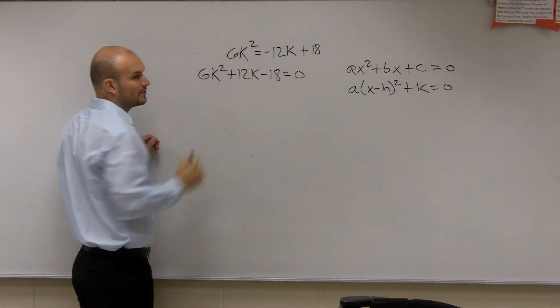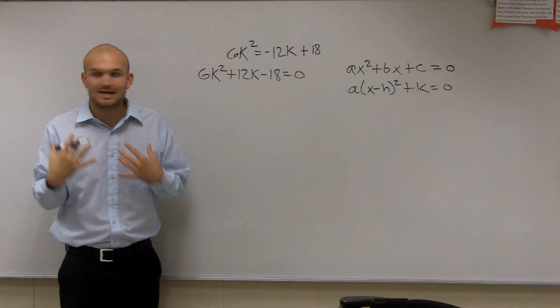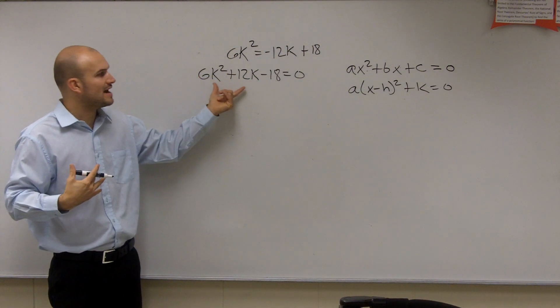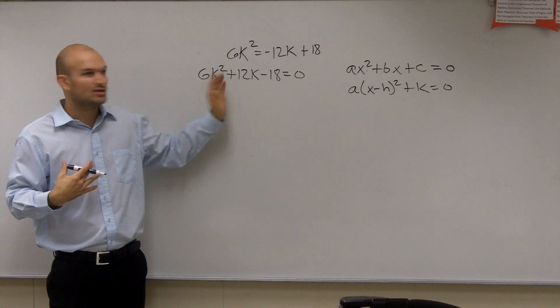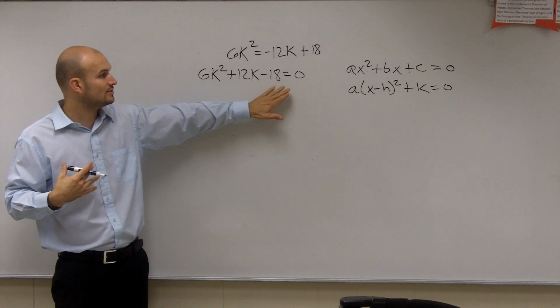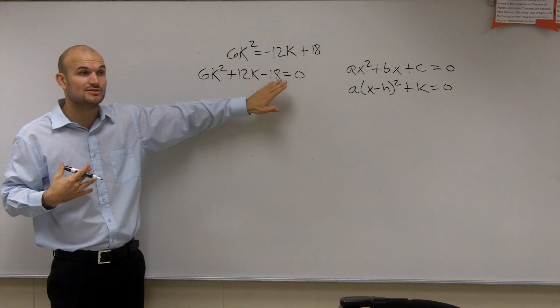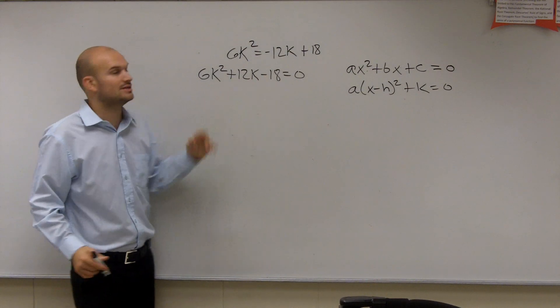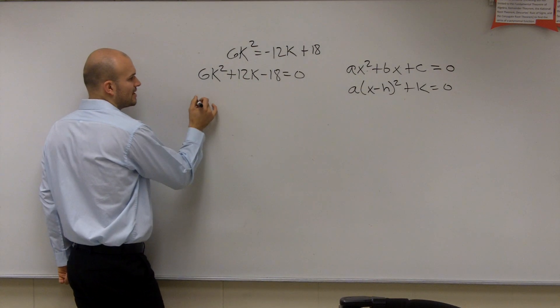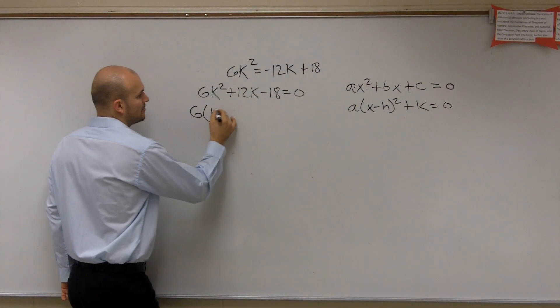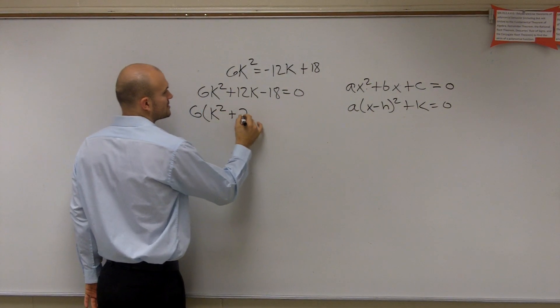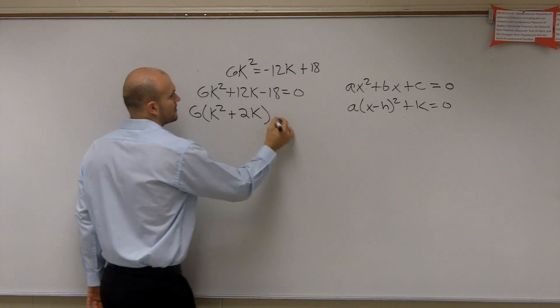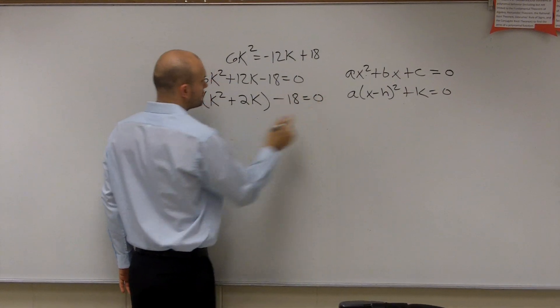Now you could factor it out of all three terms. To me, it's less confusing if I can just remember to factor it out of the first two terms. You don't need to factor it out of that third term. But sometimes you can't even. It's just important that you make sure you factor out of these first two terms. So I'm going to factor out a 6, and now I'm left with k squared plus 2k minus 18 equals 0.